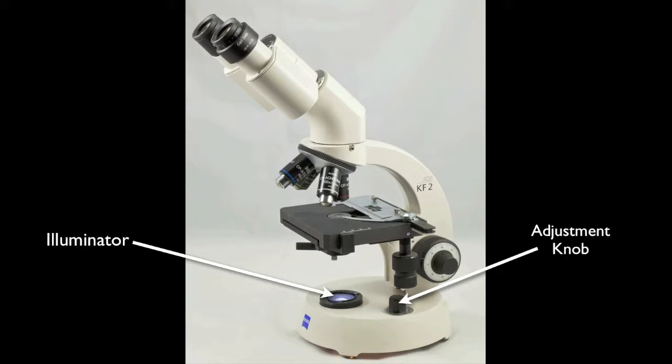The light adjustment knob is located on the right side of the base. This turns the light on and off as well as changing the intensity. You will need to adjust light intensity whenever you move to a different objective lens and to compensate for specimens of differing densities.